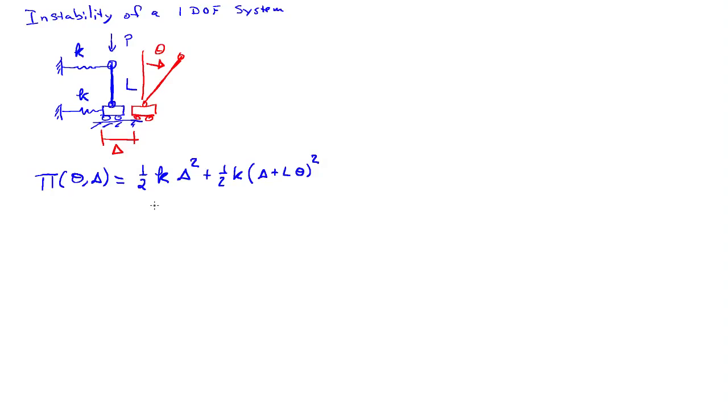And then we need the potential of the load, which is going to be, to second order, P one-half L theta squared. So that's the amount that the load point will drop if there is any motion in the system. So the translation delta doesn't give any drop to the load, but with a rotation, the upper load point will drop to second order to this amount.